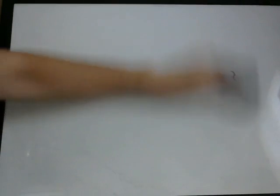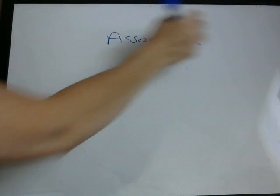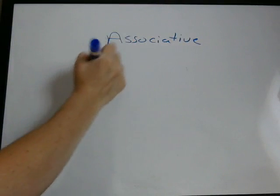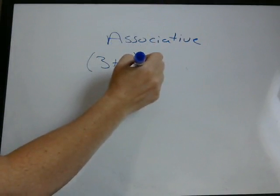The second property is called the associative property. And this just has to do with grouping with parentheses. For example, this again is with addition and multiplication.